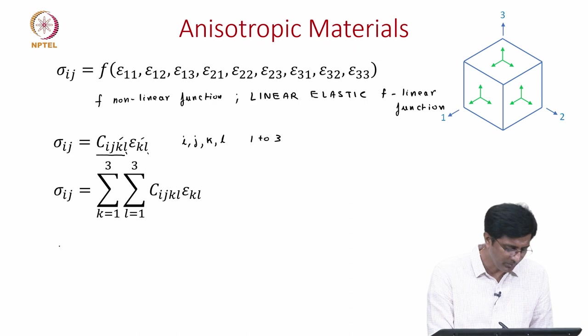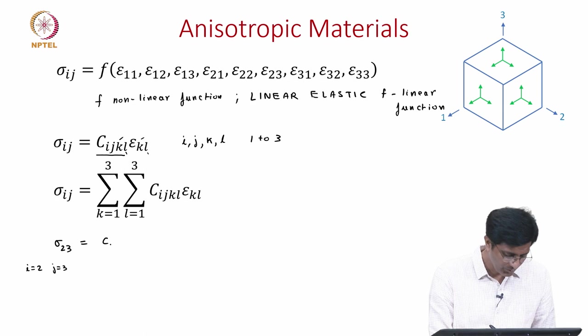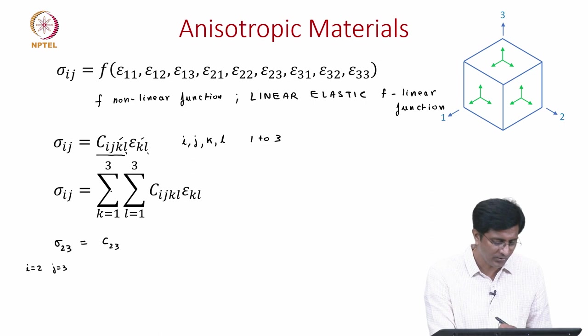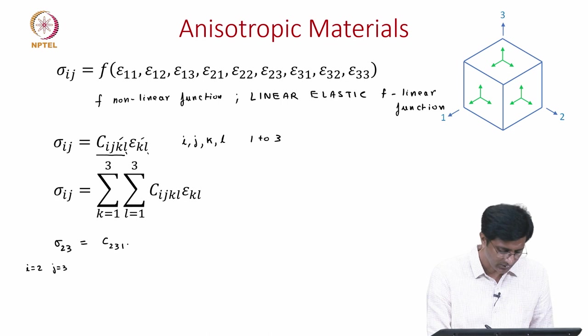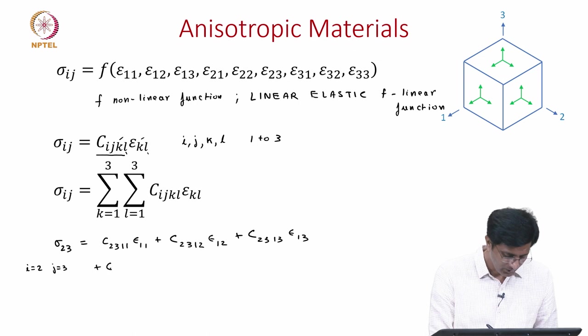To get a clear idea of what this summation means, let us focus on one particular stress component: sigma_23, meaning i equals 2 and j equals 3. We can write this summation as: C_2311 times epsilon_11, plus C_2312 times epsilon_12, plus C_2313 times epsilon_13, then with k equal to 2: C_2321 times epsilon_21, plus C_2322 times epsilon_22, plus C_2323 times epsilon_23, and then with k equal to 3 the remaining three terms. This shows that for this one single component of stress sigma_23, we have 9 components summed up, accounting for all 9 components of strain, each pre-multiplied by a constant.